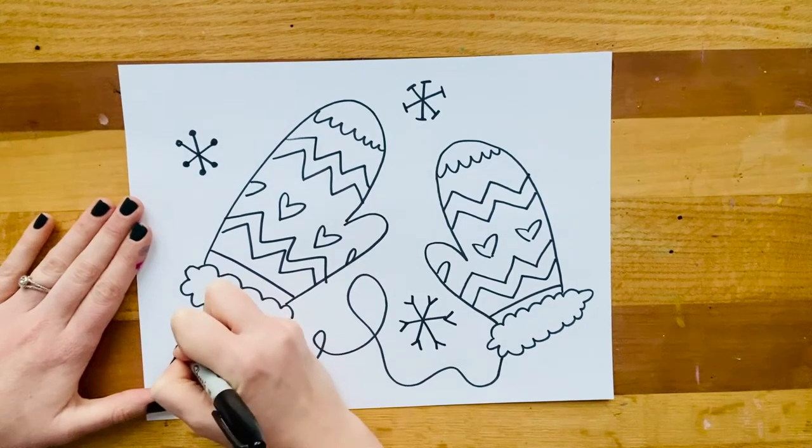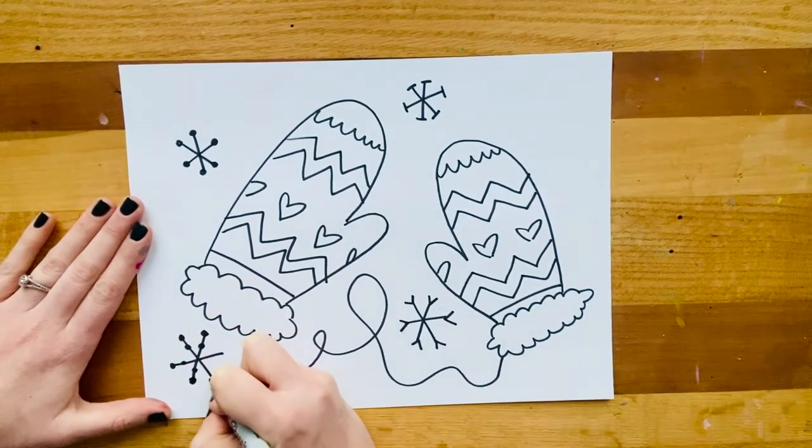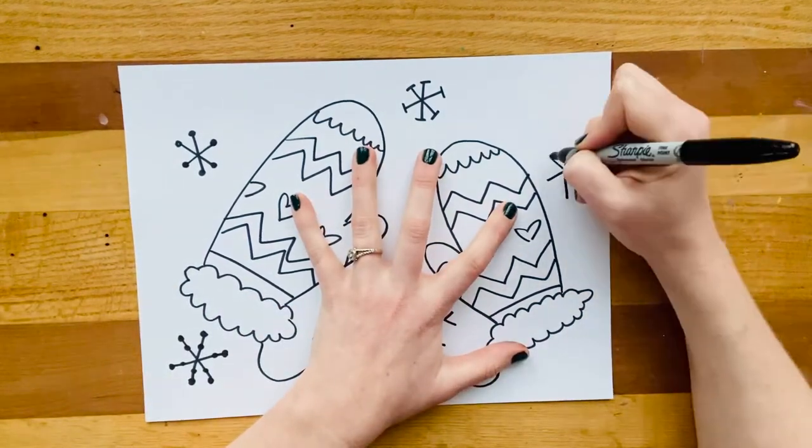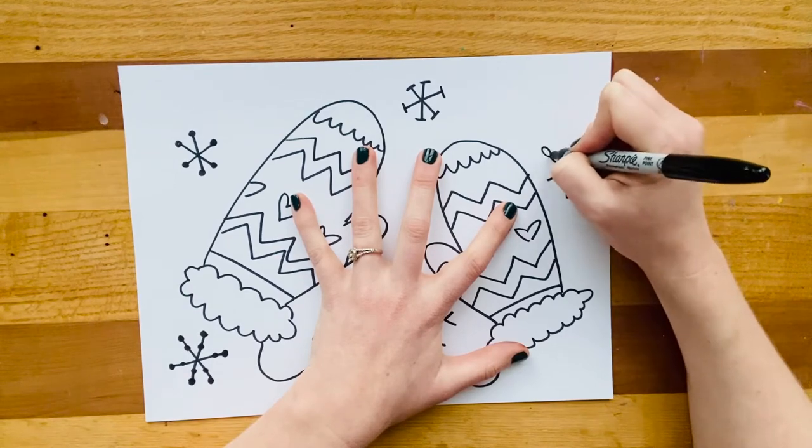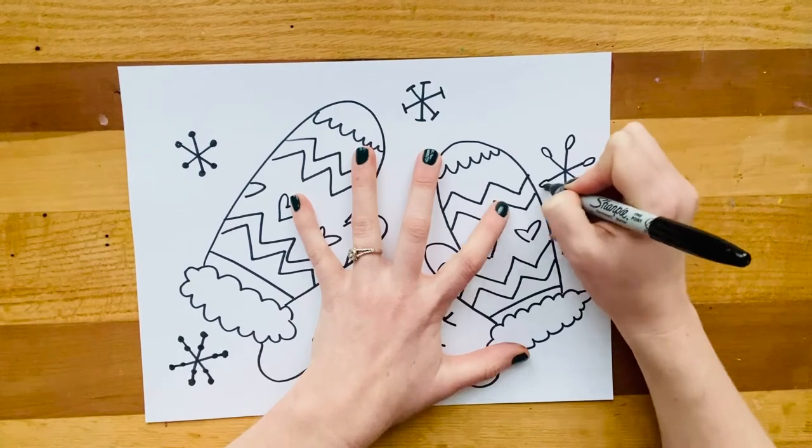So think about how you can add your details to make your design something you are proud of. And as always, when you're done drawing, then it is time to color. Let's see, maybe I'll make some little ovals or some little teardrop shapes on this one. Perfect.